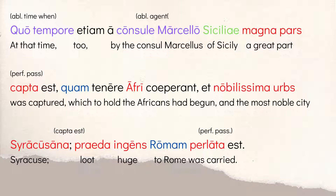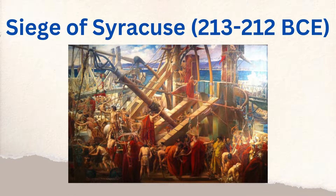He also references a really famous city: nobilissima urbs Syracusana — the most noble city, Syracuse — with capta est implied. He captured a great part of Sicily, including this famous city of Syracuse. And a praeda ingens, a huge loot, perlata est romam — was carried back to Rome, perfect passive. So not only does he capture Syracuse, but he's bringing a great deal of spoils of war back to Rome.